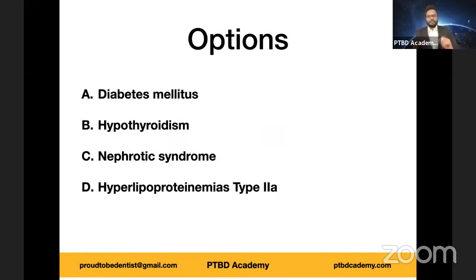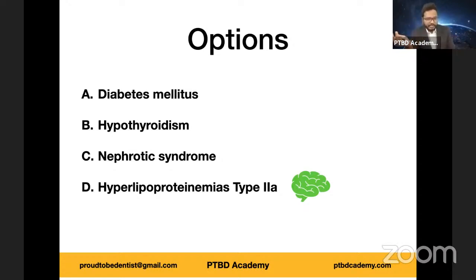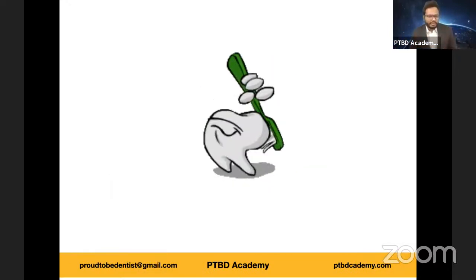Coming back to the options — as most of you rightly answered, it is hyperlipoproteinemia type 2a, or familial hypercholesterolemia. The reason I specifically mention hyperlipoproteinemia type 2a is because there are different types of hyperlipoproteinemias. In type 2a specifically, there is a decrease in the number of LDL receptors, leading to elevated LDL as a consequence. We'll revisit the other types of hyperlipoproteinemias later as a homework question.